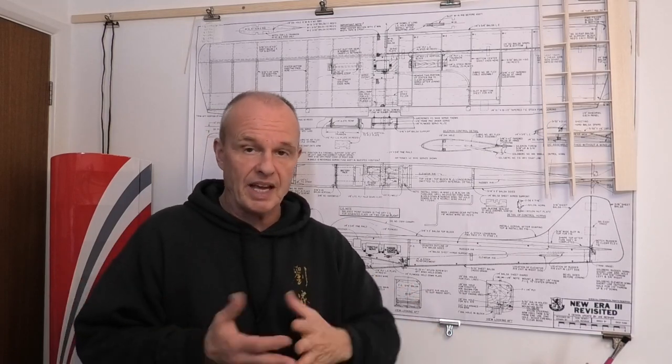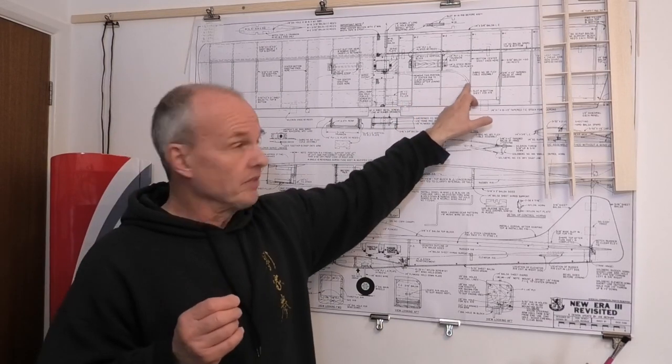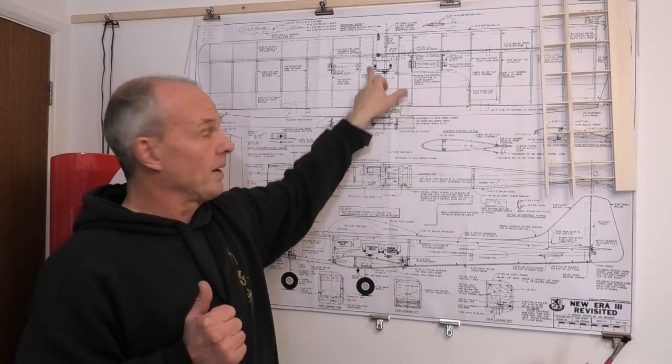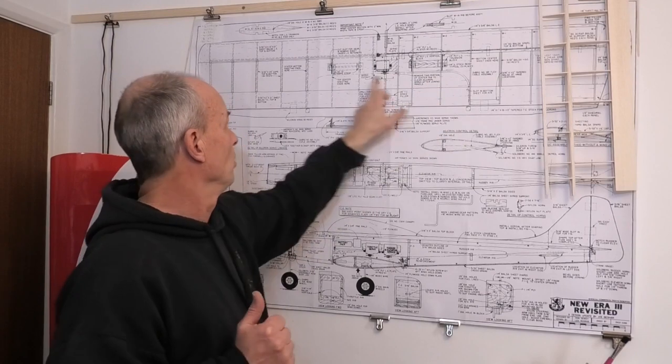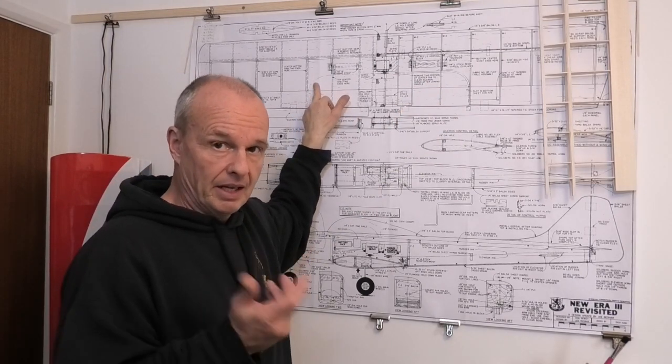Now before I do anything else, before I continue joining the wings together or doing the sheeting, I need to think about the placement of the servos because I'm doing away with this central servo and I'm going to put in two wing servos. So I need to think about the mounting for that and build that.